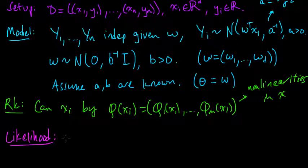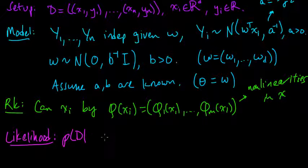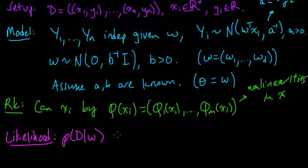So what is the likelihood function? The likelihood function is just the probability of the data given theta. And in this case, we already know theta is just w, so let's just write w there. And this, we know from the videos where we computed the MLE for linear regression.